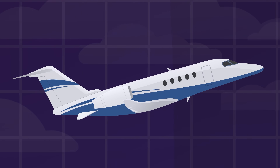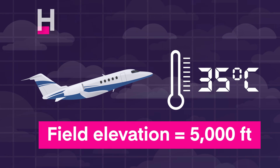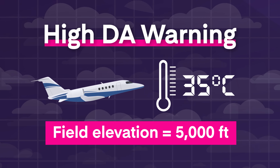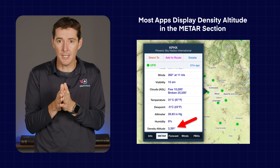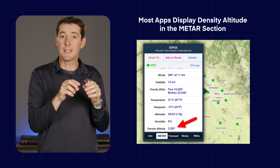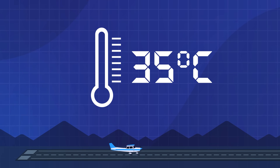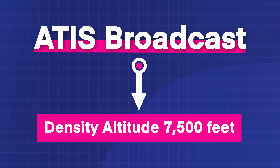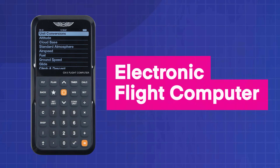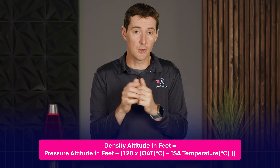That said, knowing the density altitude can still be helpful — it gives you a quick feel for how the airplane is actually going to perform, especially when conditions are far from standard. The easiest way is checking your EFB, as most apps show density altitude in the METAR section. During a warm summer day, the ATIS may also report it. You can also use an E6B, an electronic flight computer, or a density altitude chart. And if you want to calculate it by hand, here's the formula.